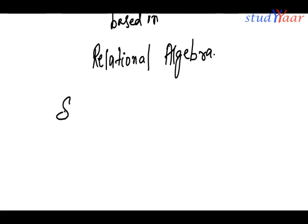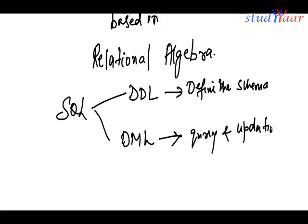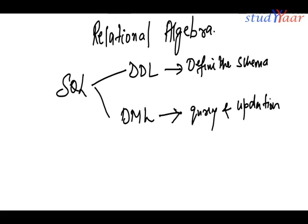SQL has two basic parts, the DDL part and the DML part. DDL helps me define the schema. DML helps me to query and to make updations. Updations would include everything: insertion, deletions, modifications. Or it's better to write it as query and modification.